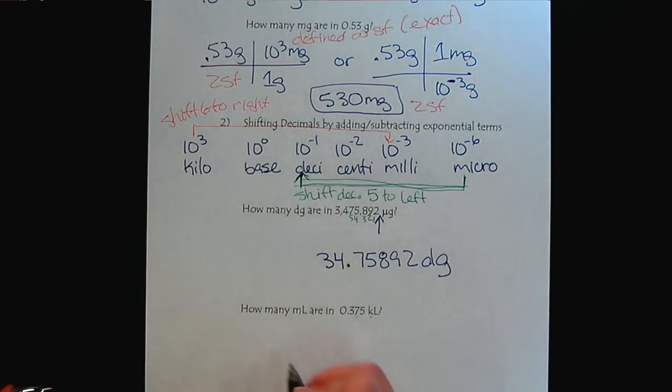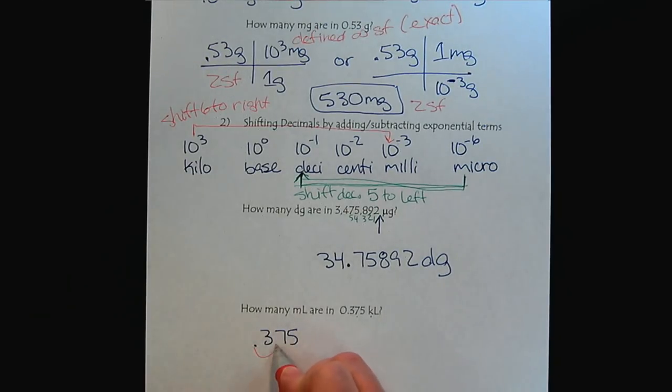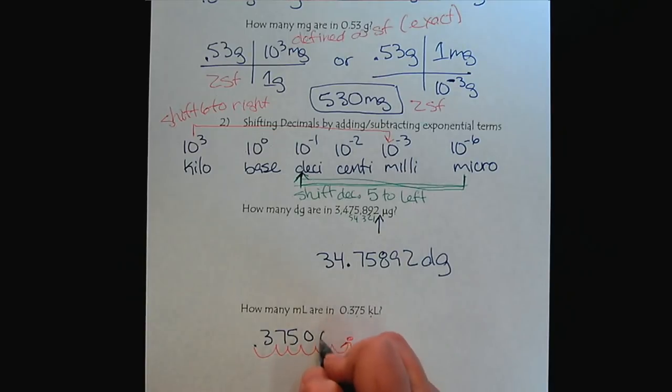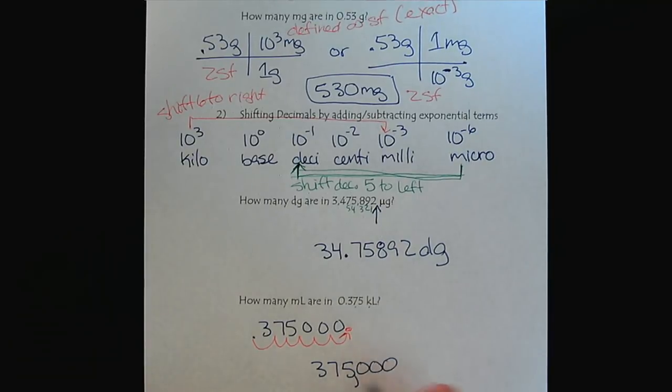So if the decimal started here, we're going to shift six to the right. So one, two, three, four, five, six. Our decimal goes right there. So we're going to have to add zeros. So that would be 375,000 milliliters.